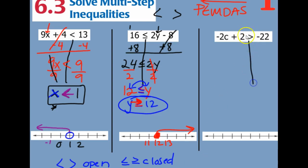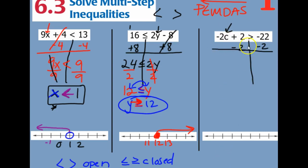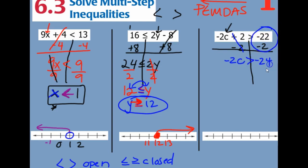Same thing on this next one. We want to get c all by itself, so the opposite of adding 2 would be subtracting 2. Those eliminate. We have negative 2c is greater than. Be careful here — same sign, add and keep — that's a negative 24.